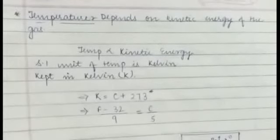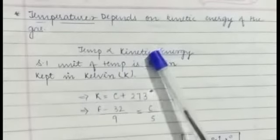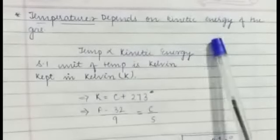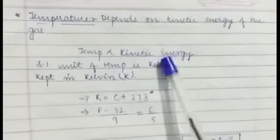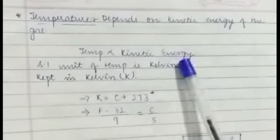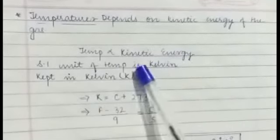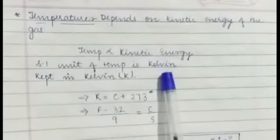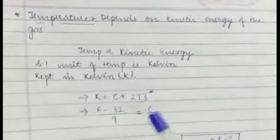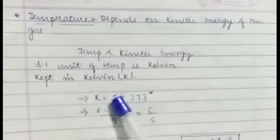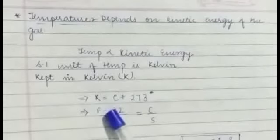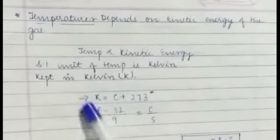Now we come to the third measurable property called as temperature. So we know that the temperature of a gas depends upon the kinetic energy of a gas. The unit of temperature is Kelvin and we always keep the temperature in Kelvin. If we have degrees Celsius then we convert it to Kelvin by adding 273. And if we have Fahrenheit then we first convert it to Celsius and then to Kelvin.